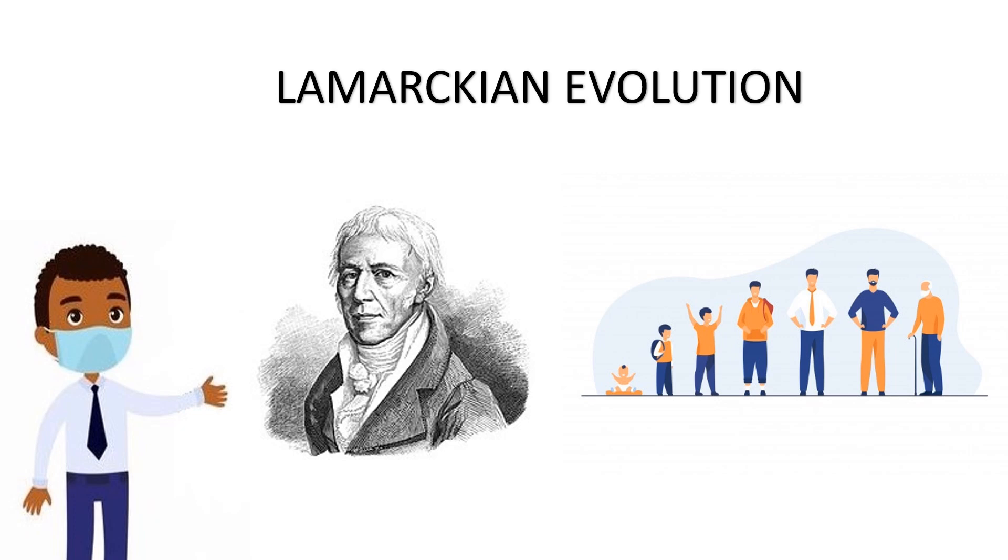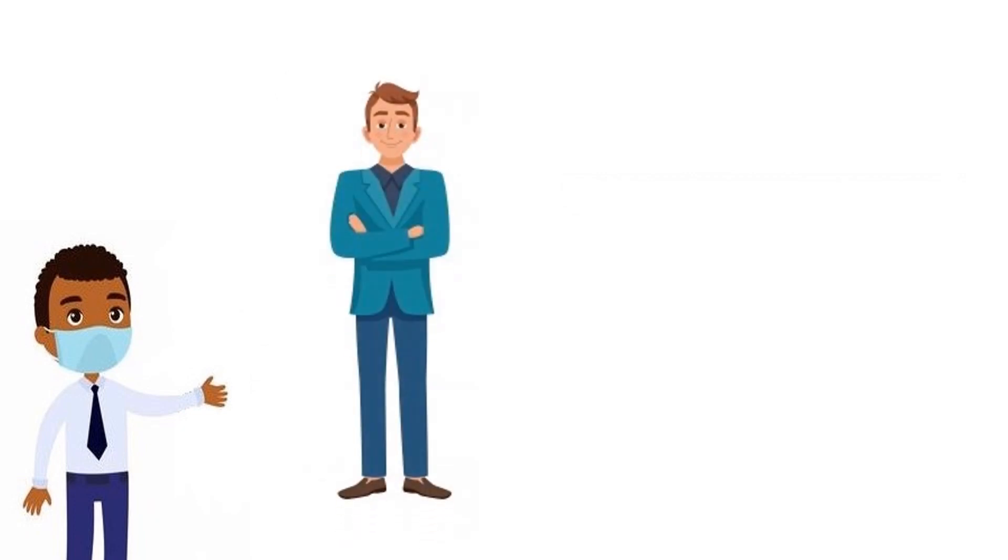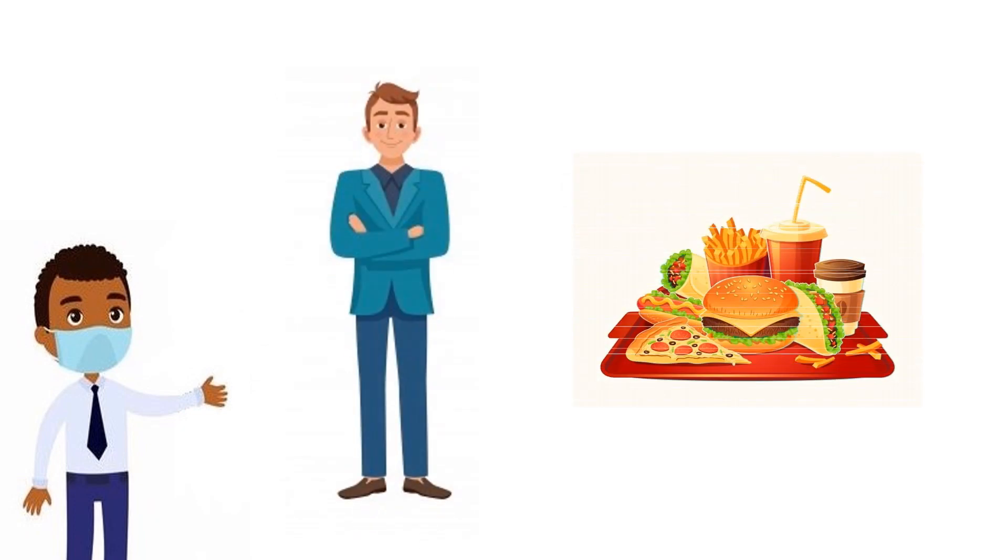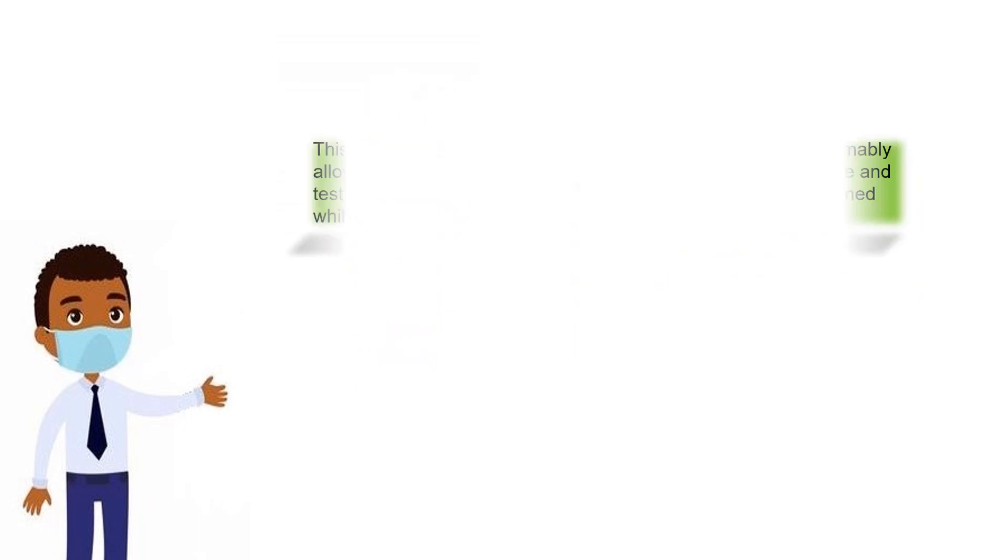If an individual learns during its lifetime to avoid toxic food, then it can pass on this trait or characteristic genetically to its offspring, which does not need to learn that characteristic.